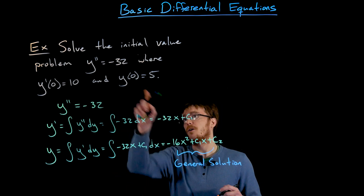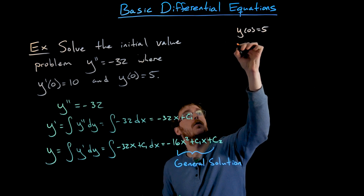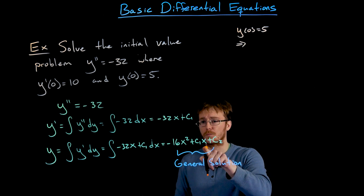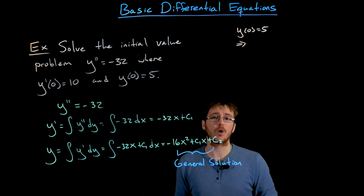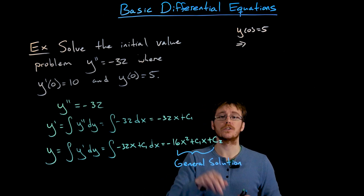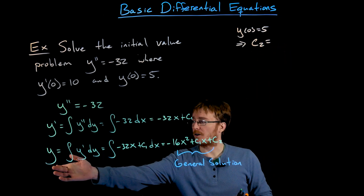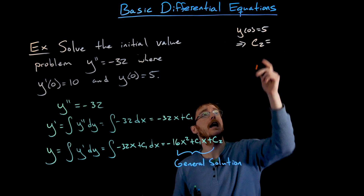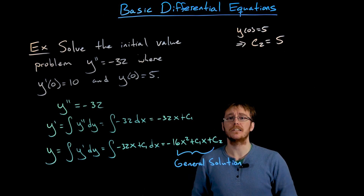For instance, we know y of 0 equals 5. If we plug x equals 0 into our general solution, the first two terms vanish and we're left with c2. So the value of the general solution at x equals 0 is c2, and we need that to equal 5 — which tells us c2 must equal 5.